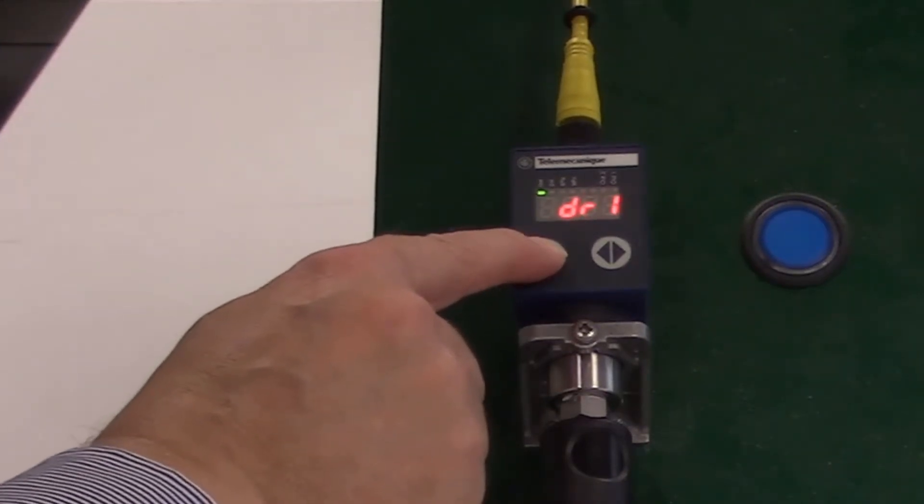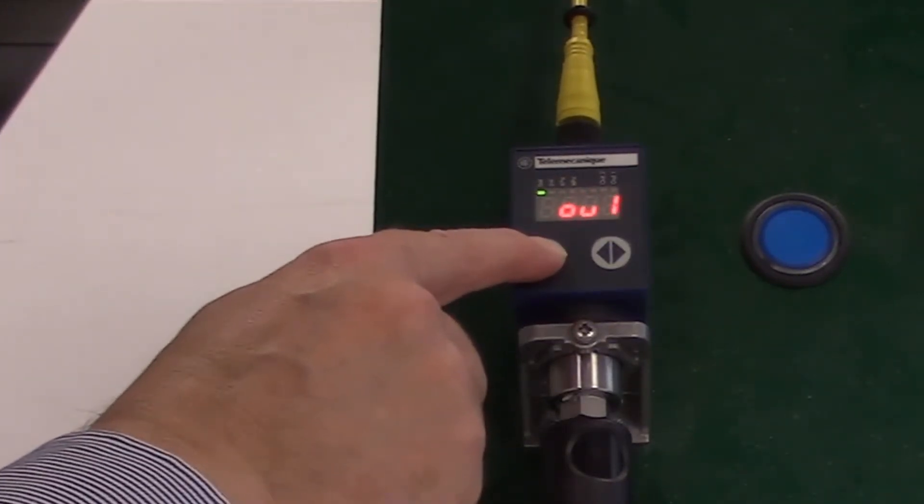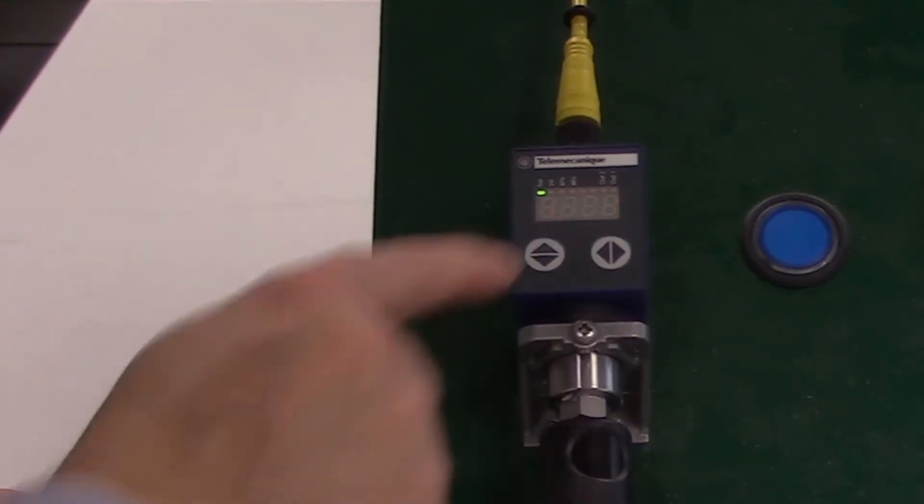Press the up down button to scroll to OU1, Output 1. Then press the left right button to confirm.